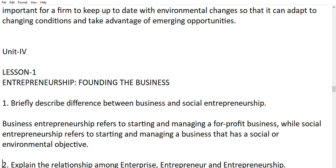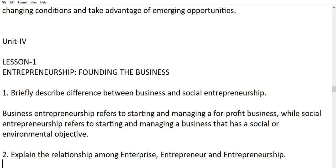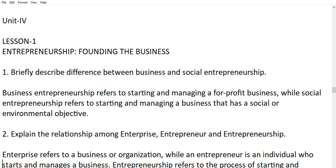First question: briefly describe the difference between business entrepreneurship and social entrepreneurship. Business entrepreneurship refers to starting and managing a for-profit business. Social entrepreneurship refers to starting and managing a business that has a social and environmental objective — for example, a startup focused on fixing an environmental problem. If the primary goal is profit, that is business entrepreneurship.